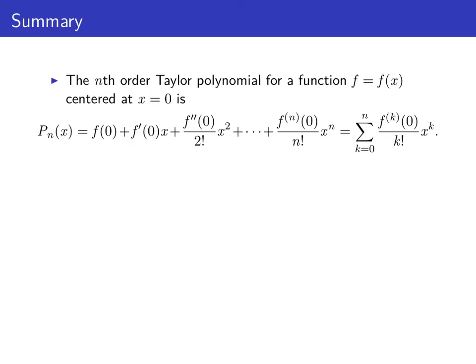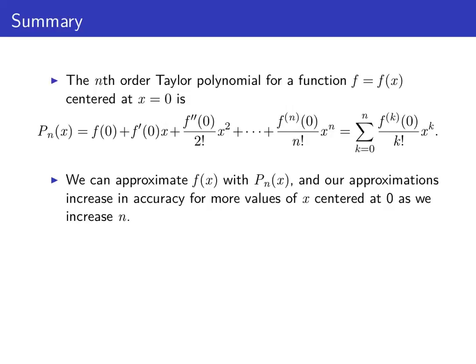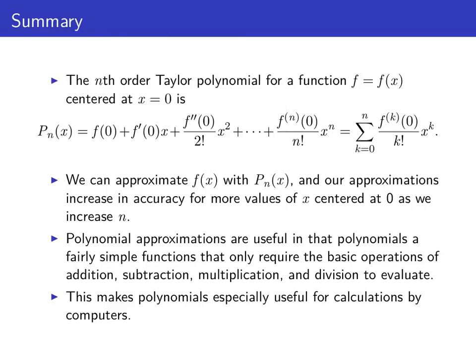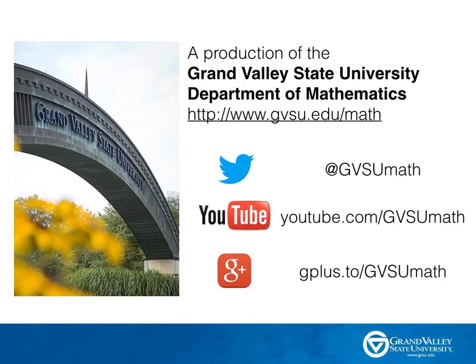To summarize, we have the formula for the nth order Taylor polynomial for a function centered at zero. We can use Taylor polynomials centered at zero to approximate functions as long as we stay close to the base point zero, and the accuracy increases as we increase the order. Polynomial approximations are very useful because to evaluate a polynomial, we just have to add, subtract, multiply, and divide — the most basic operations — making them especially useful for calculators. That concludes the screencast on Taylor polynomials centered at zero. Please come back again soon.